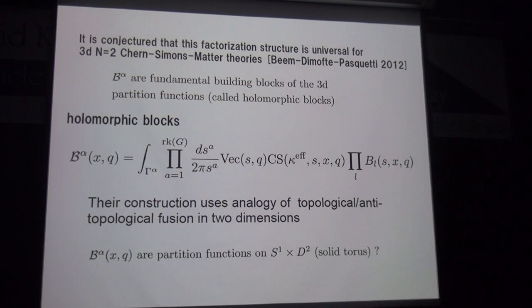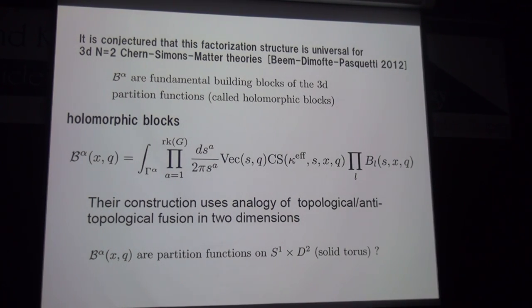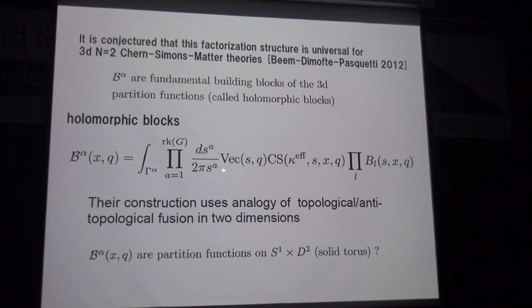In the Beem-Dimofte-Pasquetti conjecture, this factorization structure is universal for three-dimensional N=2 Chern-Simons matter theory. The building block B_α is regarded as a fundamental block of three-dimensional partition functions, which they named the holomorphic block. They also gave a construction rule for the holomorphic block: B_α is expressed as a multi-contour integral whose integrand consists of a vector multiplet contribution, a Chern-Simons contribution, and a chiral multiplet contribution.